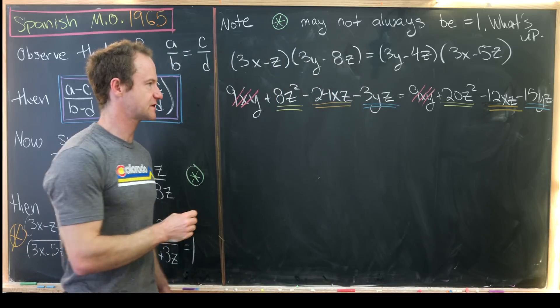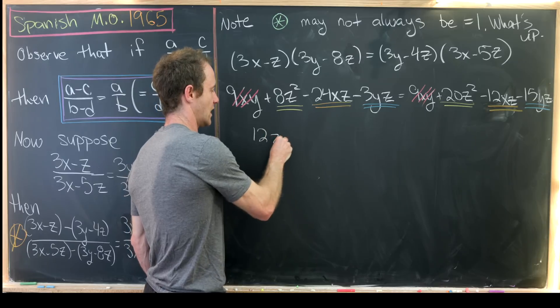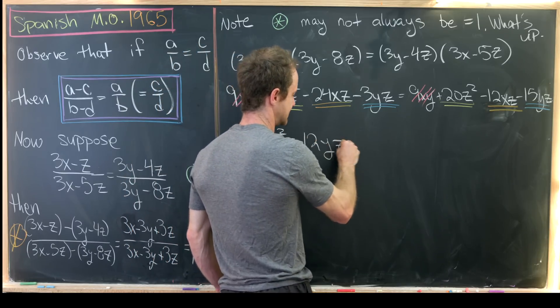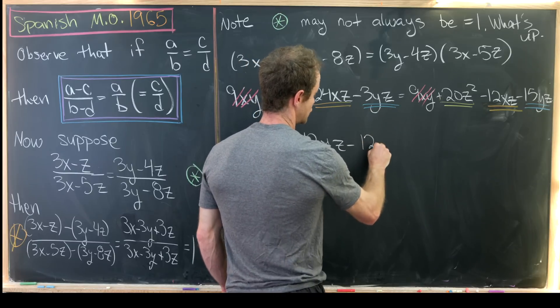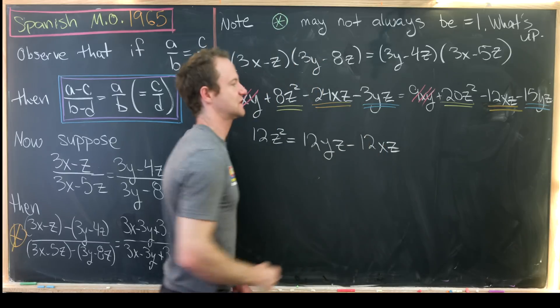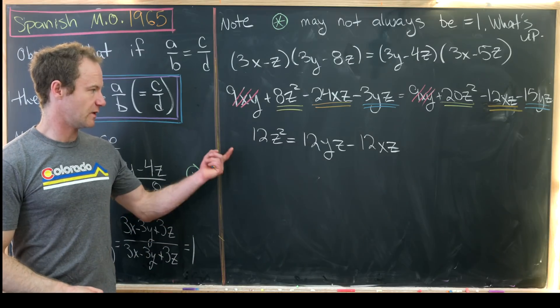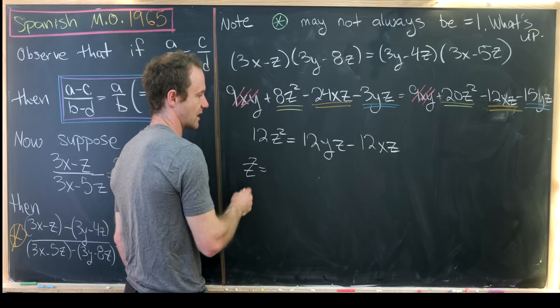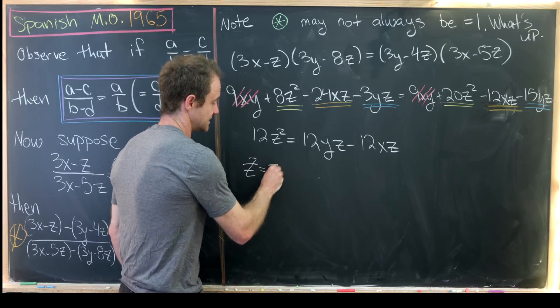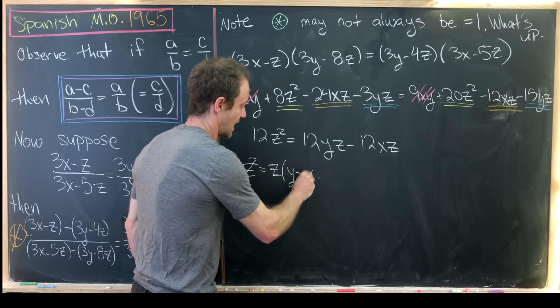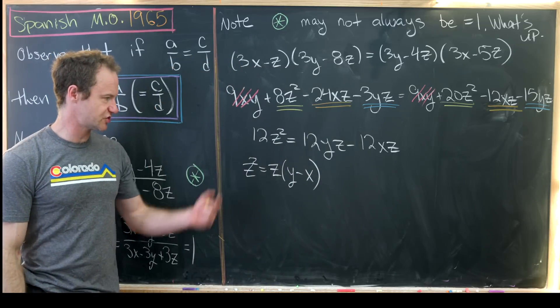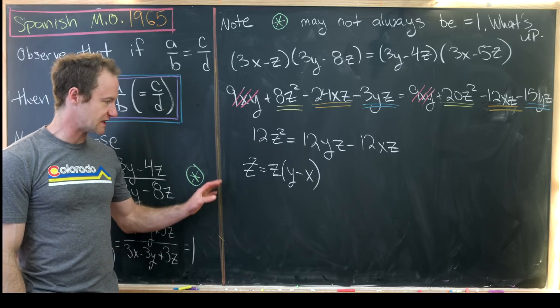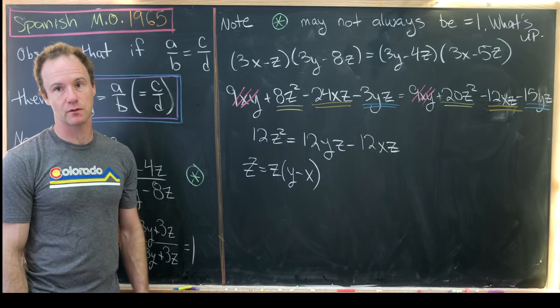So moving things around gives us the following equation. We'll have 12z squared is the same thing as 12yz minus 12xz. So again, that's just from moving things around. We can clearly do a little bit of simplification here. Notice that it gives us z squared equals z times y minus x. And you might say, well, let's just cancel 1z from both sides of the equation, but that's only allowed when z is not equal to 0.